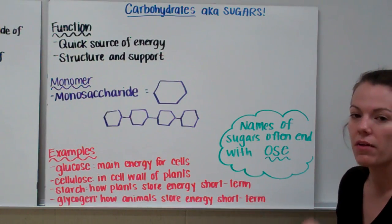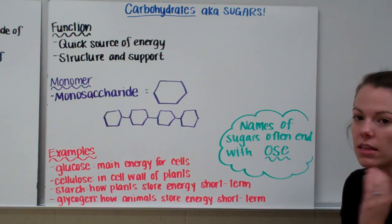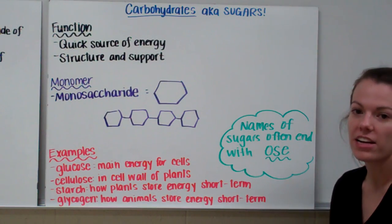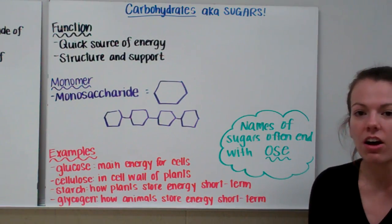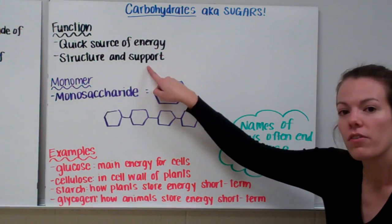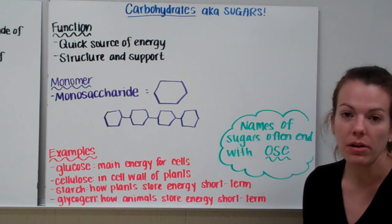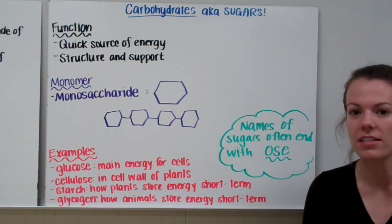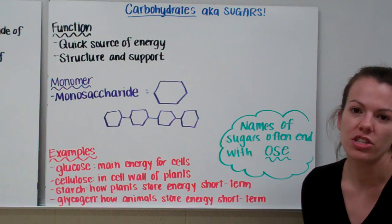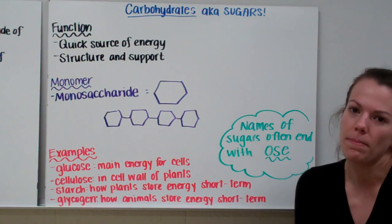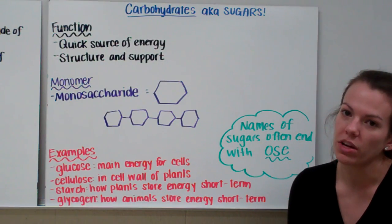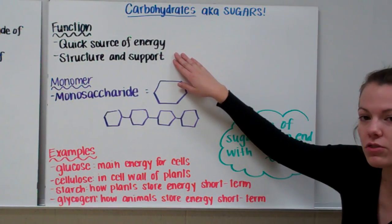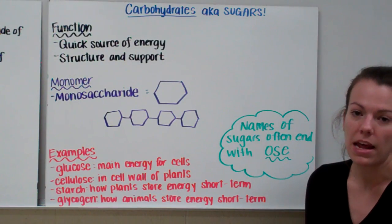Remember, we have four organic molecules: carbohydrates, nucleic acids, proteins, and lipids. Let's start with carbohydrates. Carbohydrates are also known as sugars. The function of carbohydrates is that they're a quick source of energy, and they can also provide extra structure and support for cells. If you were to run a marathon and you wanted to make sure you had a lot of energy beforehand, you would carb load — eat a lot of bagels and pasta. You use protein to build your muscles, not for quick energy. Carbs give you a lot of energy, and they're also used for structure and support, like the cell wall.